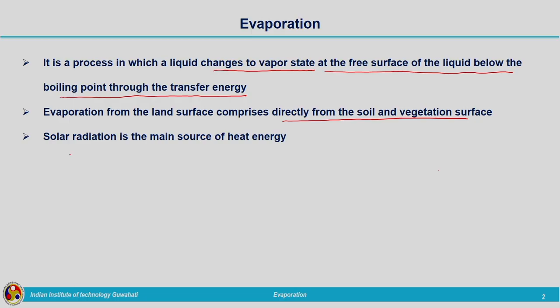What is the main reason behind evaporation? The main reason is heat energy. Heat energy from the sun is absorbed by the water molecules, and these water molecules attain a certain energy level. Beyond a threshold level, these water molecules escape from the surface tension forces and are converted to water vapor, moving towards the air above the free surface. The main reason is solar radiation.